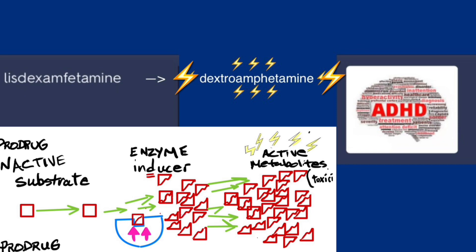An example is lisdexamfetamine — Vyvanse. It's a prodrug used to treat ADHD. It's converted into dextroamphetamine in the blood, but it provides a slow and steady release of the active drug, leading to smoother, longer-lasting effects compared to traditional amphetamine. It has no action if injected or snorted, which reduces the potential for abuse or dependence of this controlled drug.